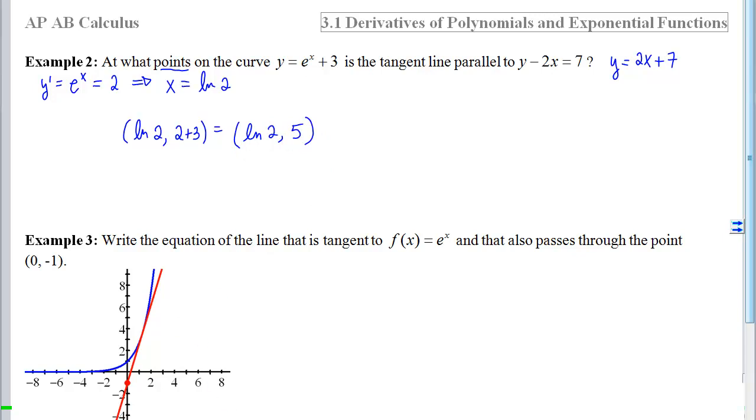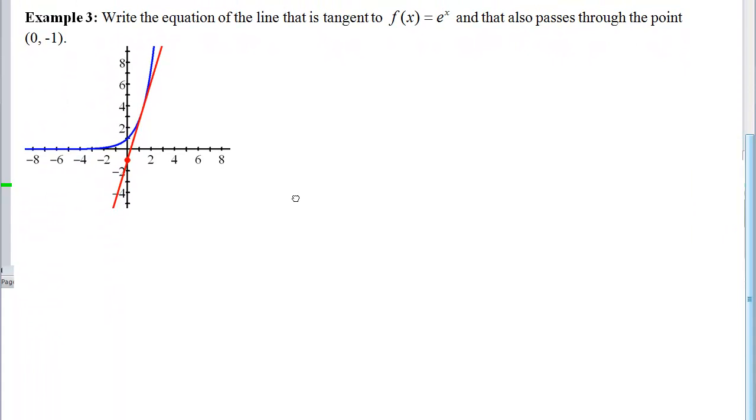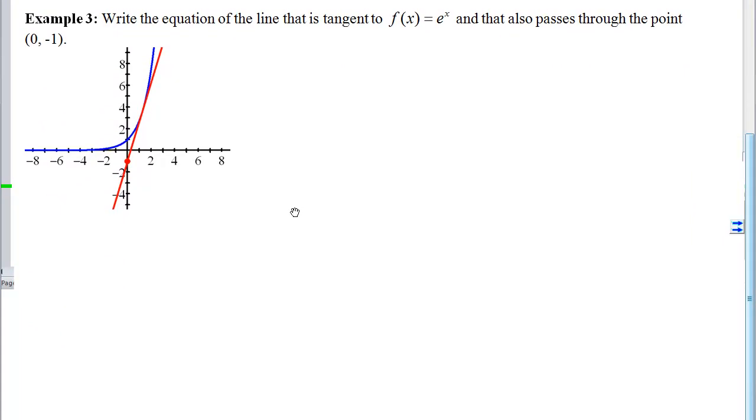With example 3 now, we want to write the equation of the line that is tangent to this f of x equals e to the x that also passes through the point 0, negative 1. So here's my favorite problem type coming back to haunt us. Notice that this point that the tangent line is crossing through is not on the curve itself, so it's not the point of tangency. So our goal is to figure out what that point is.